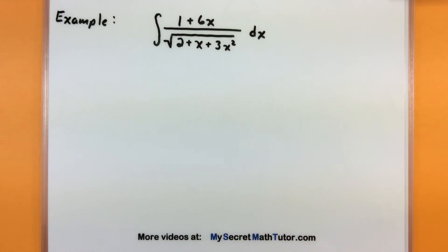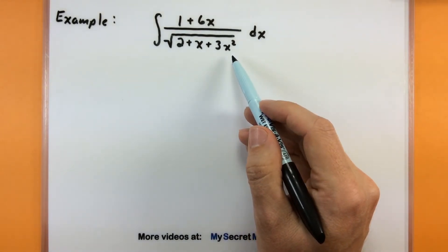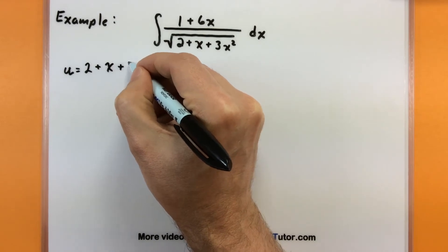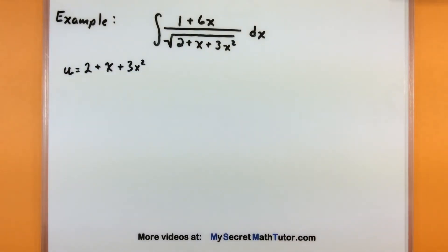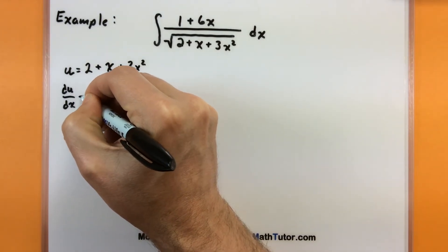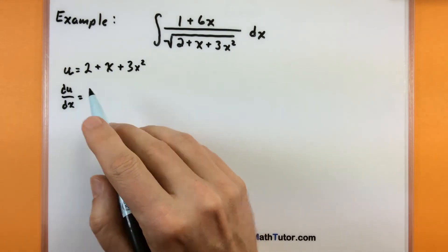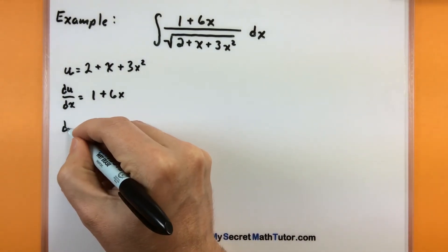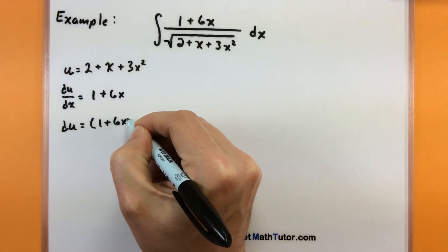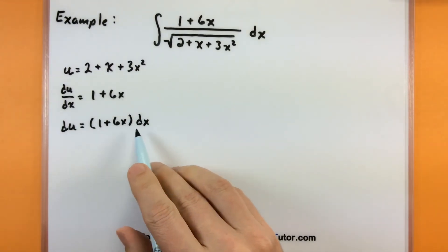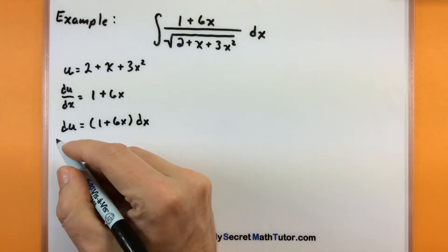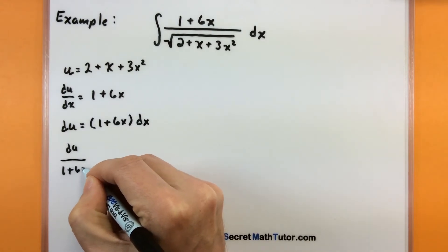This next example has a fraction — definitely a complicated integral. Looking at the bottom, I have a 3x squared, and if I take its derivative I get 6x, which looks like an excellent choice for u. So we'll call u equal to 2 plus x plus 3x squared. Now take its derivative using Leibniz notation: the constant goes to zero, this gives 1, and this gives 6x. Let's solve for dx: multiply both sides by dx, then divide both sides by 1 plus 6x, giving dx all alone.